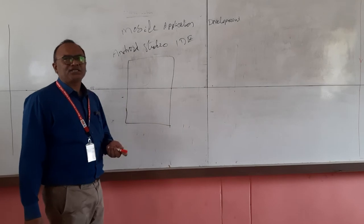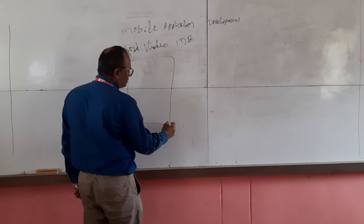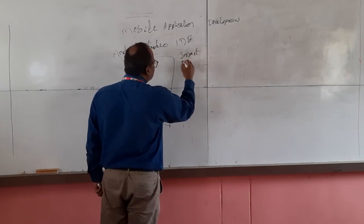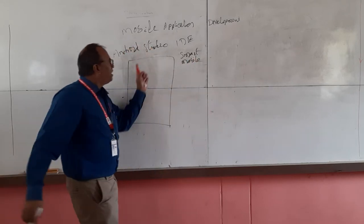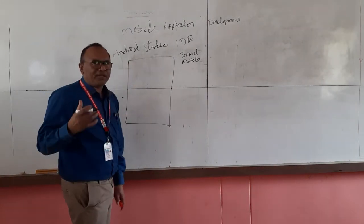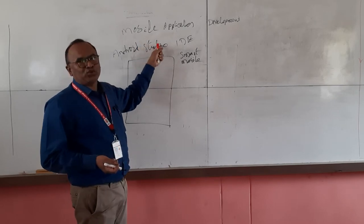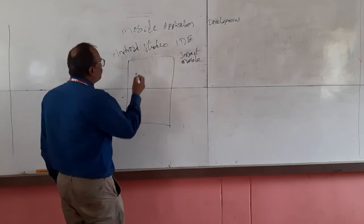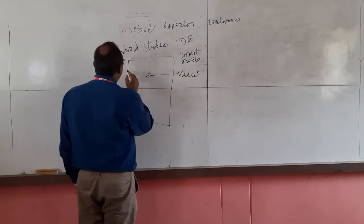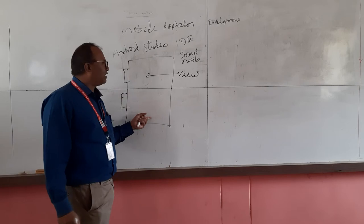If you take this as your smart mobile, it has a screen area. In this screen area your application should fit, and that can be automatically taken care of by Android Studio when you create the application. This screen area is called the view area, and then you have buttons for volume, buttons for on/off, and other kinds of stuff.